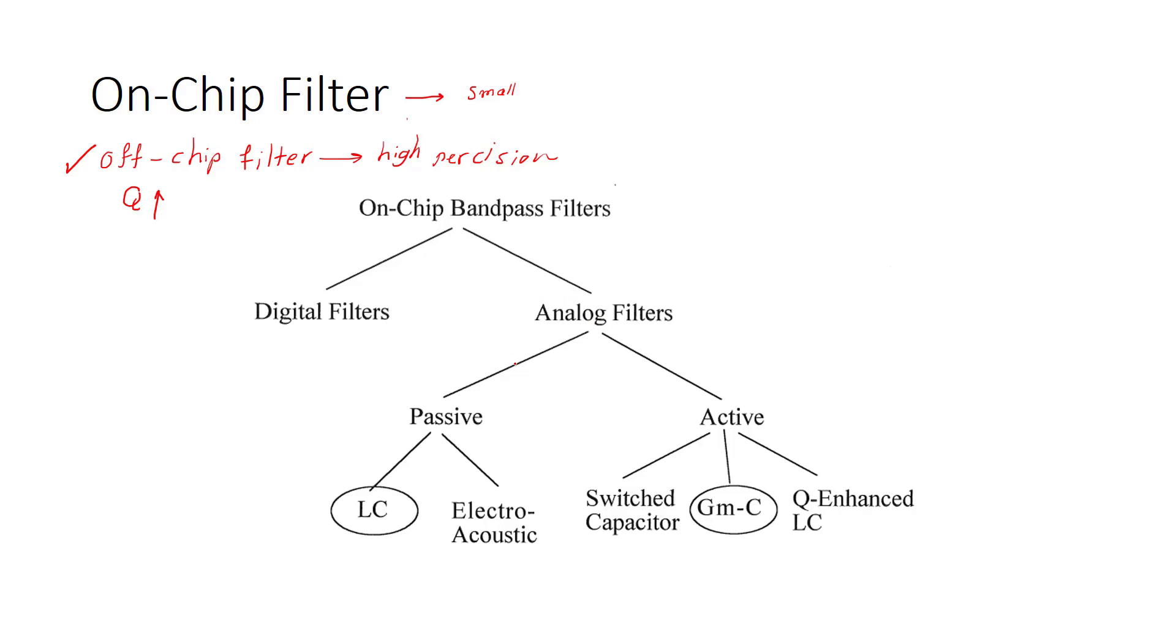We mostly use analog filters. Here, as you see, passive filters and active filters. Passive filters, for example LC filter, are bigger than the active ones because we use inductor, and inductor occupies an area which is really high.